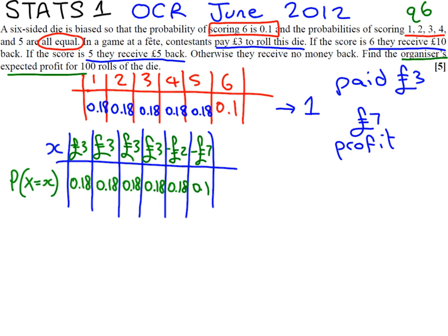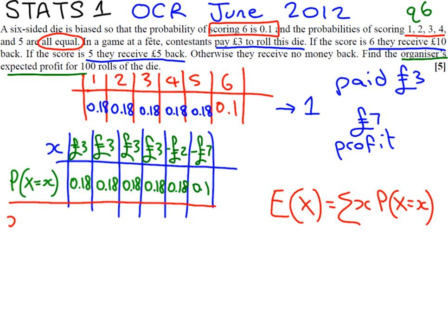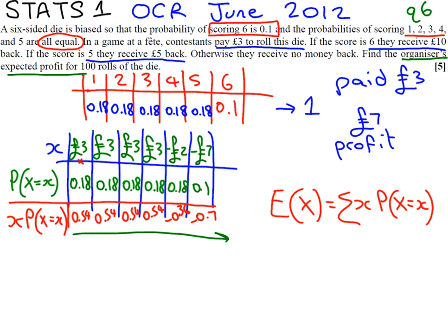What we want is the expected value. The formula for the expected value is the sum of X times the probability of getting X for each possible outcome. We calculate X times P(X) for each case: 3 × 0.18 = 0.54 for each of the four outcomes rolling 1–4, minus 0.36 for rolling a 5, and minus 0.7 for rolling a 6. When we add up all these values, we get that the expected value of X is 1.1, or in pounds and pence, £1.10.